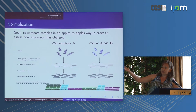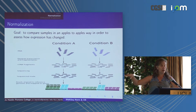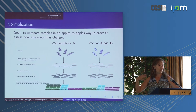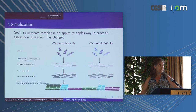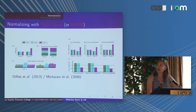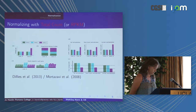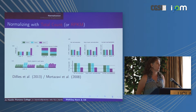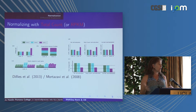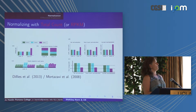We want to know if expression in condition A is higher than condition B due to biological differences, not technical variability. One approach you might think of is total count normalization — just take the total number of reads and divide by that number. We're scaling by sequencing depth. Let's see what happens when we do that.